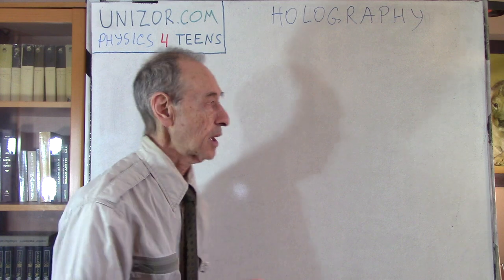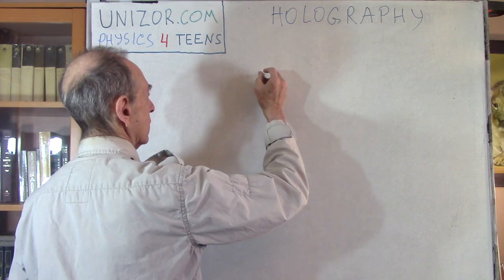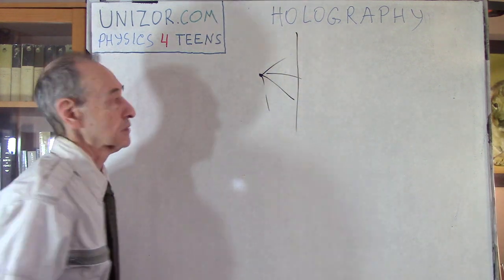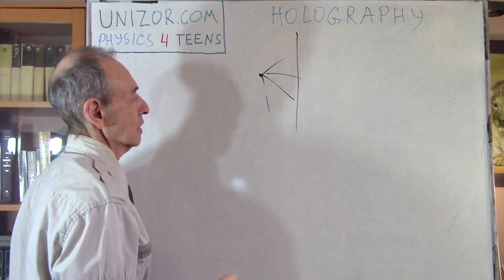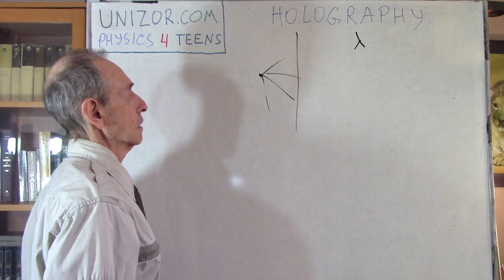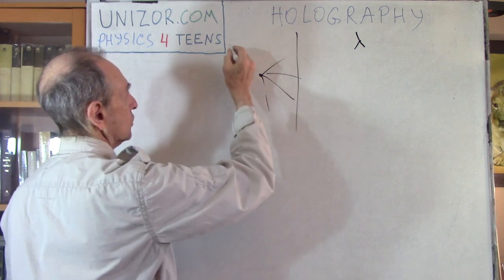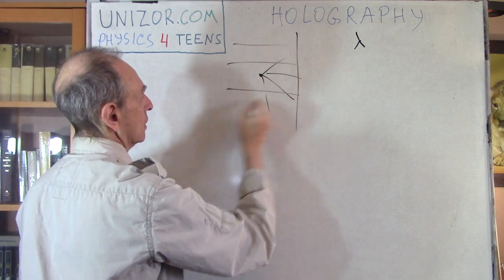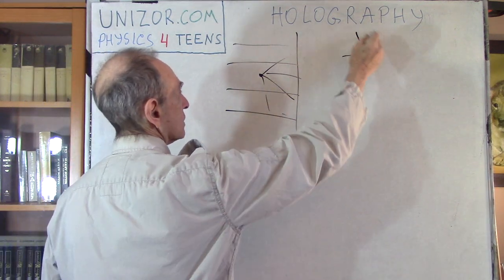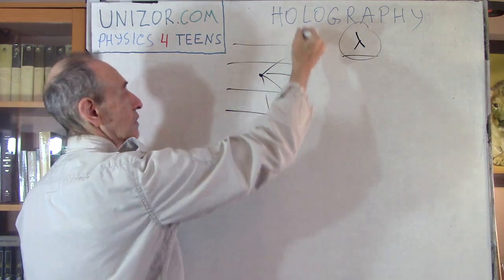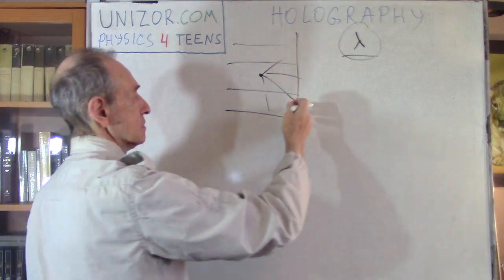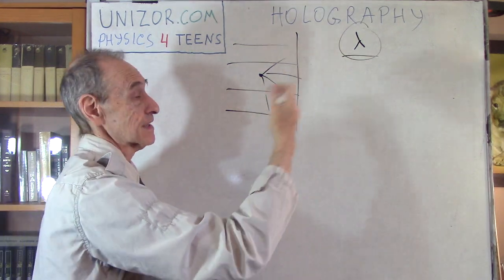Let me remind you that whenever you have a point light going in all different directions, assuming it is a monochromatic light of wavelength lambda, whenever we have parallel rays of the same monochromatic light of the same wavelength, we will have some interference picture.